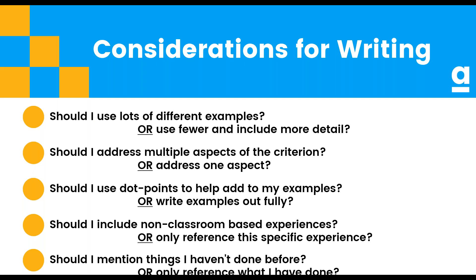When it comes to providing examples, we want to make sure that we can find a balance between using different examples — maybe to reflect different types of experiences that we've had. Maybe you're an English and drama teacher, so you want one example to reflect what you've done in the English classroom and one that you've done in the drama classroom. Perhaps you've had a couple of different roles or different setting types, so maybe you do want to have a few different examples showing the one thing in a couple of different ways. But what we don't want to do is go through a grocery list of things we've done without being able to go into detail.